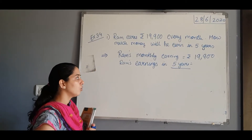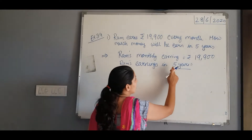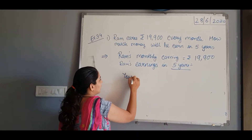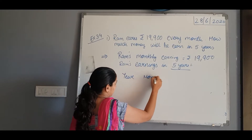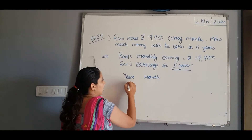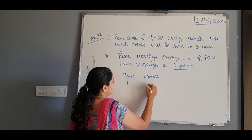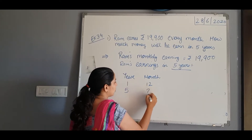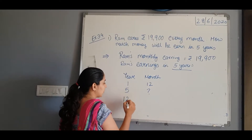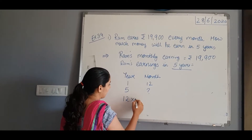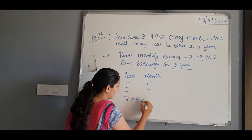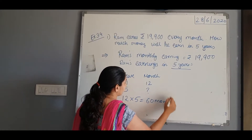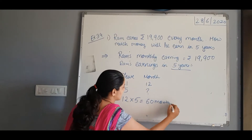So what we will do first — we will convert these 5 years into months. 1 year is equal to how many months? 12 months. So 5 years will be equal to how many months? We will simply multiply 12 by 5. So 12 multiplied by 5 equals 60 months. So 5 years equals 60 months.